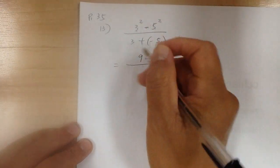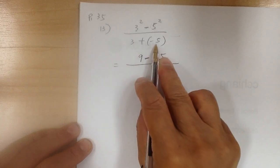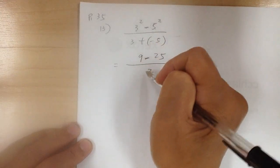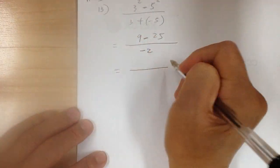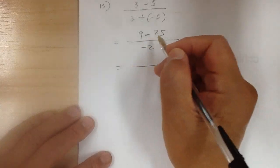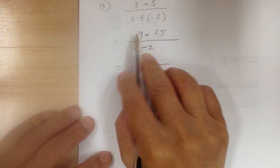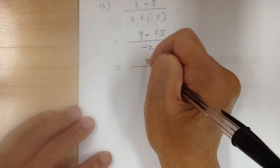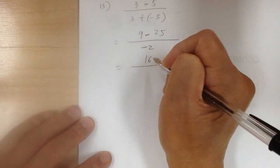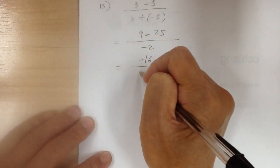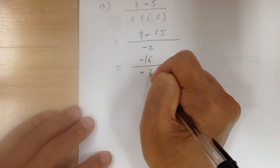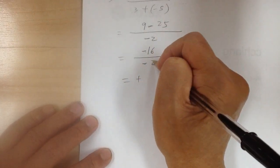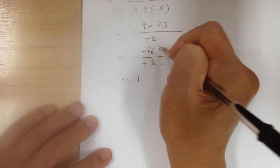So 5 squared is 25. Over here, this is positive and this is negative — opposites. When you add together, you subtract the numbers and follow the sign of the bigger number, which is negative. To combine: 25 minus 9 gives you 16, and you follow the sign of the big number, which is negative. The bottom gives you negative 2. After that, you can reduce — negative over negative gives you positive — 16 over 2, divide by 2, you get 8. So the final answer would be positive 8.